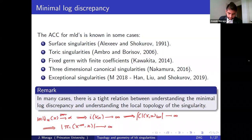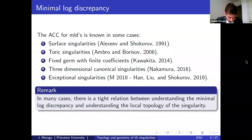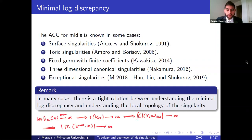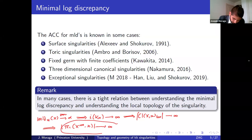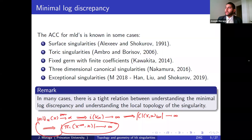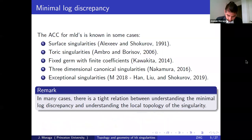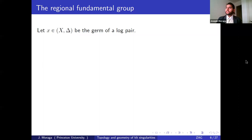This is one implication: if the minimal log discrepancy converges non-trivially, then the local topology becomes really large. The opposite direction is not necessarily true, but that is something I am trying to understand — if you start from large topology, can you deduce something about the MLD? I can do it in some cases.